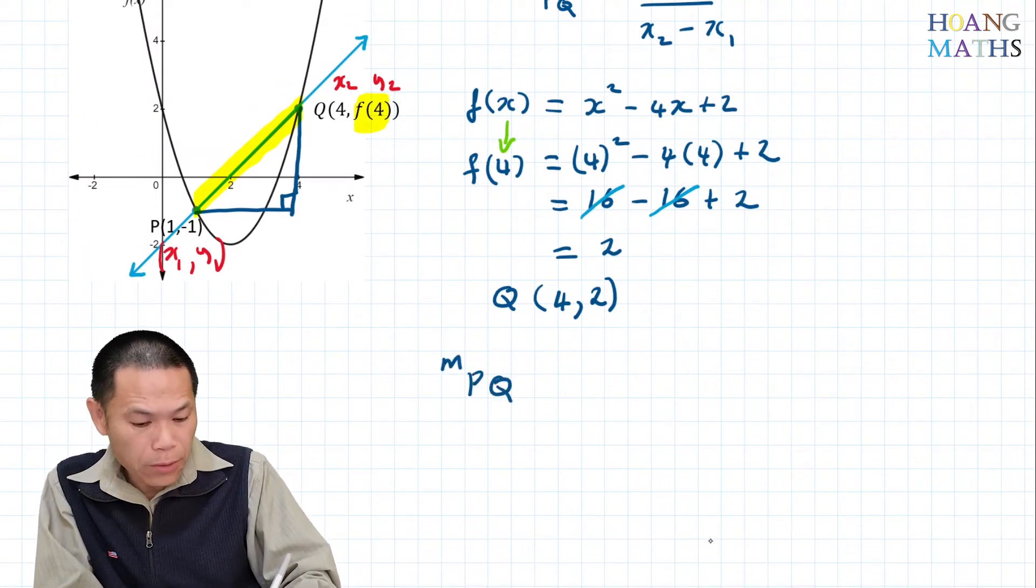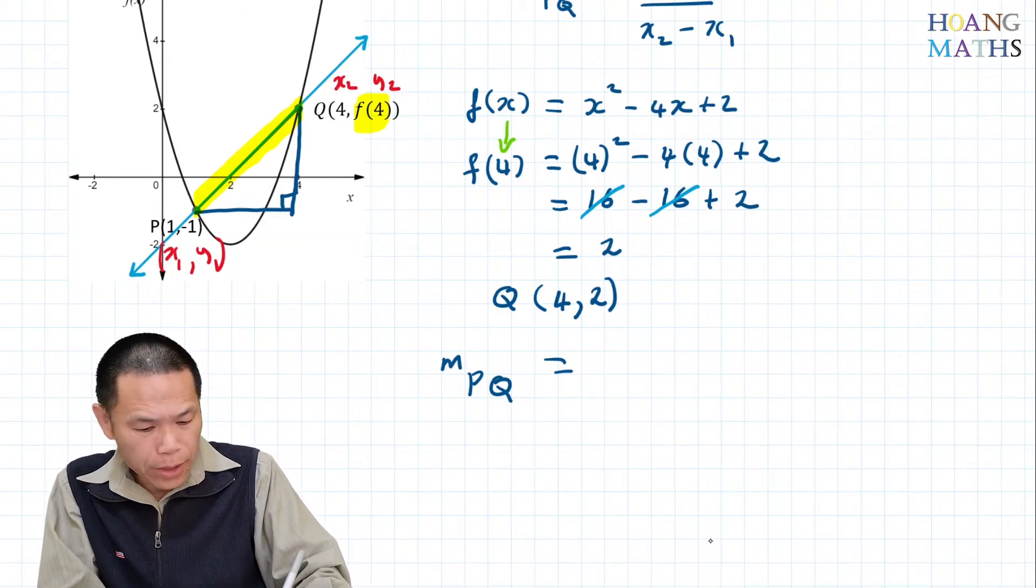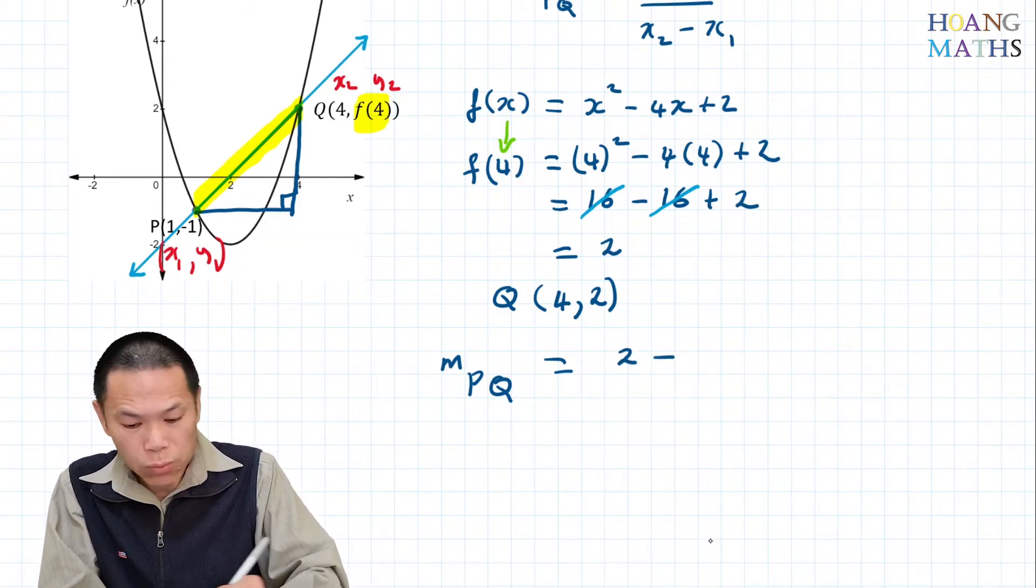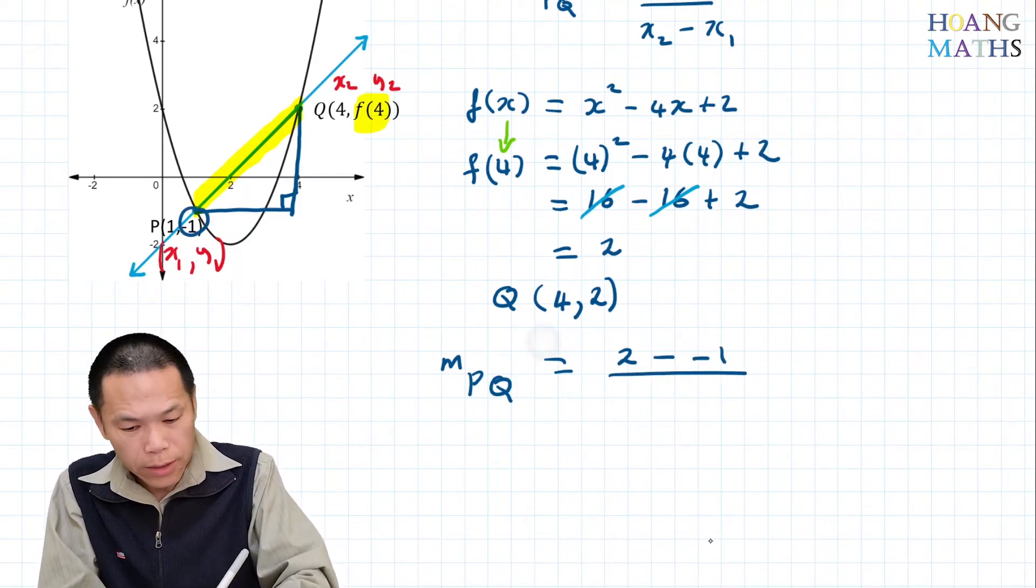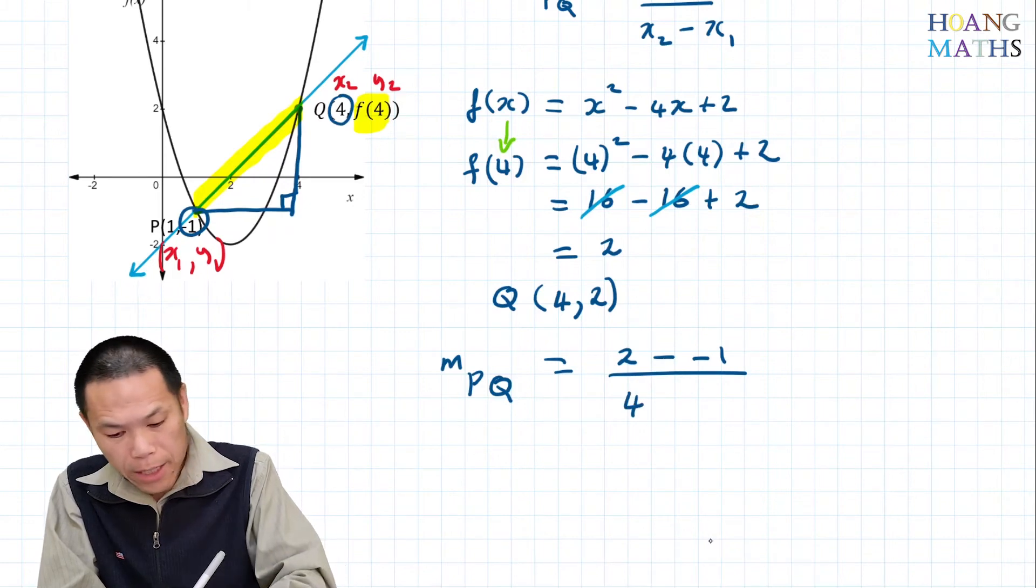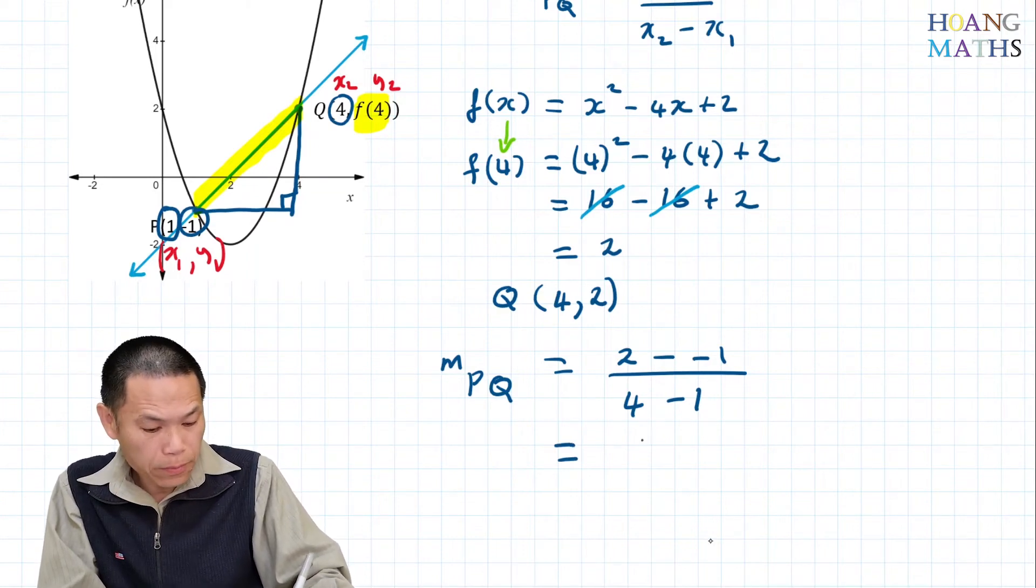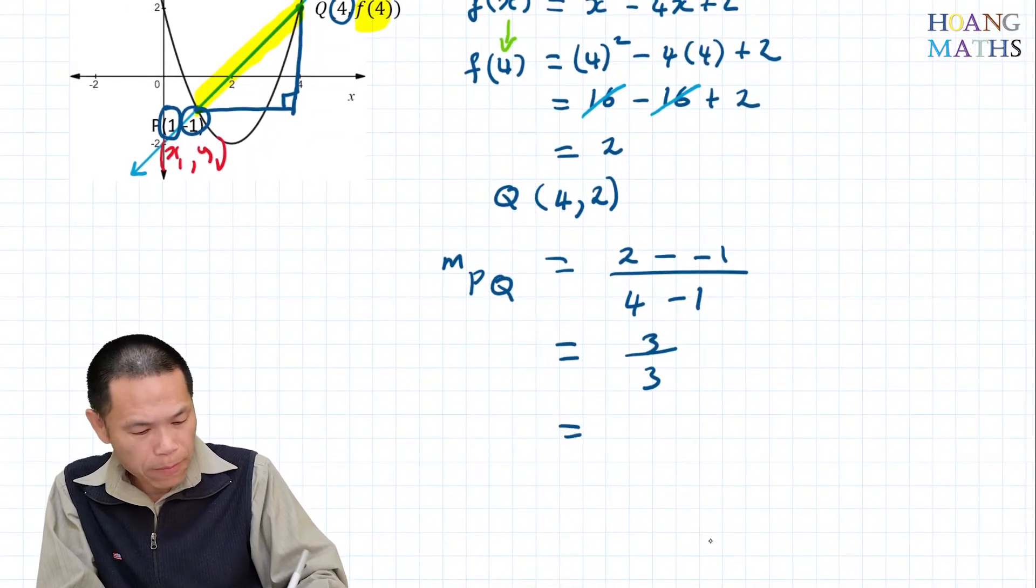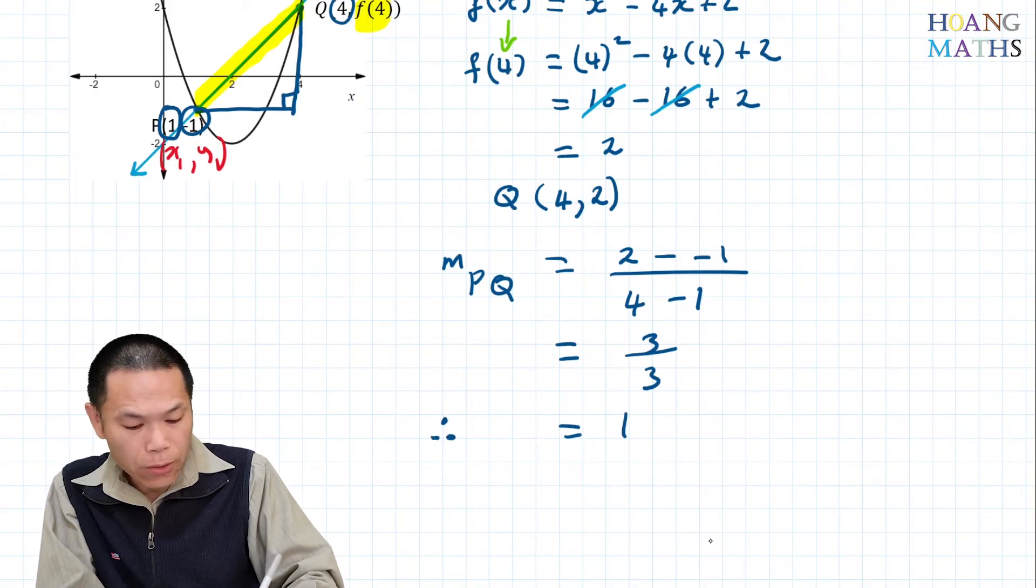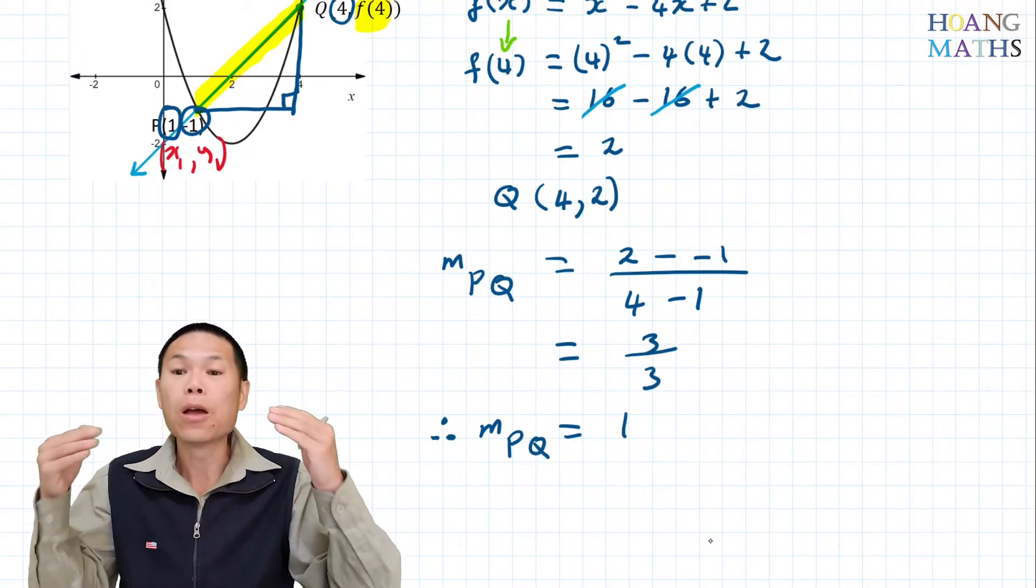So m of PQ: y₂ minus y₁, so that's 2 minus (-1), over x₂ minus x₁, which is 4 minus 1. That gives us 3 over 3, which equals 1. Therefore, the gradient of secant PQ is 1.